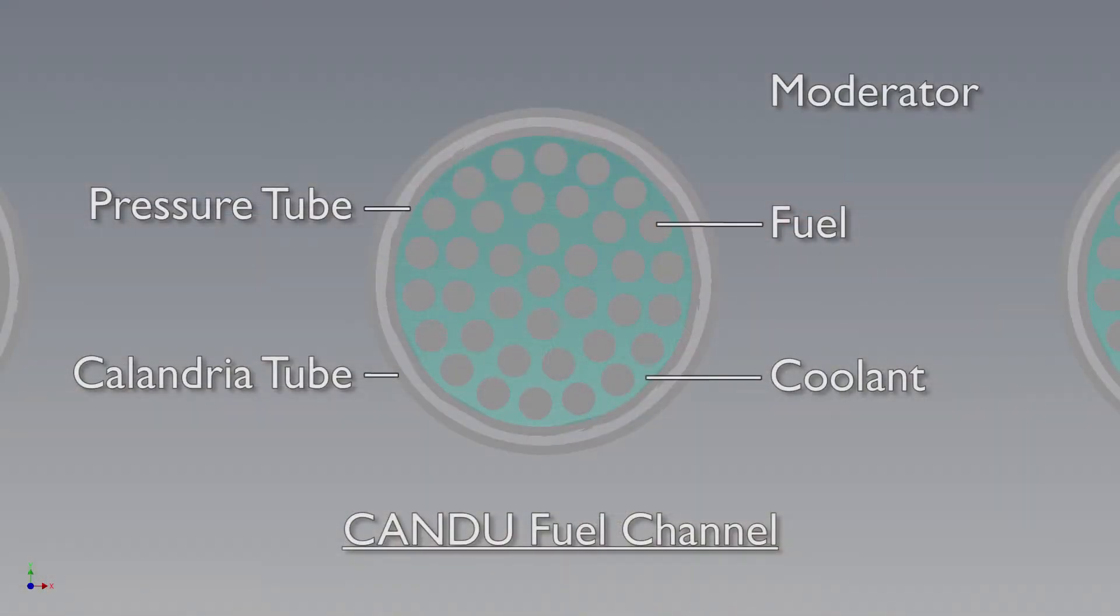CANDU reactors use nuclear energy to supply Ontario with more than half of its electricity. The nuclear reaction is made possible by water located between the fuel channels in the larger overall vessel. This water is called the moderator, and it is important to control its temperature to maintain safe operating conditions.